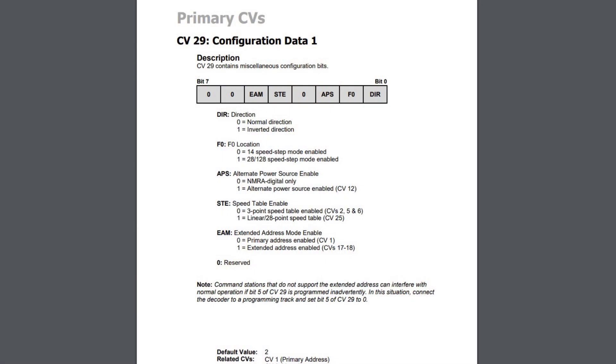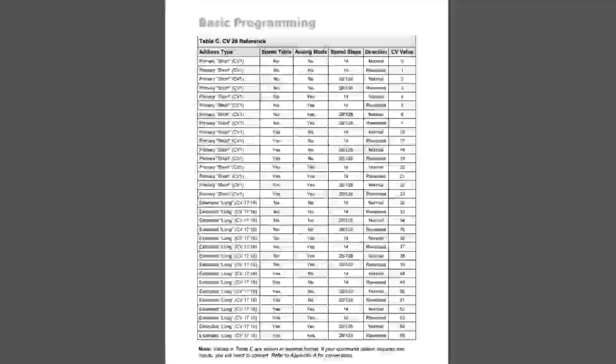With CV 29, the last two bits — bits 6 and 7 — are not being used at all, and neither is bit 3, so we're just ignoring those completely. When you go through the manual and look at the chart for CV 29 in the user's guide, you'll see a complete breakdown of all five of those choices — yes or no, this or that. This chart shows you exactly how to derive a value for CV 29 in an illustrative format rather than having you turn on and off the individual bits, but it's essentially the same thing.